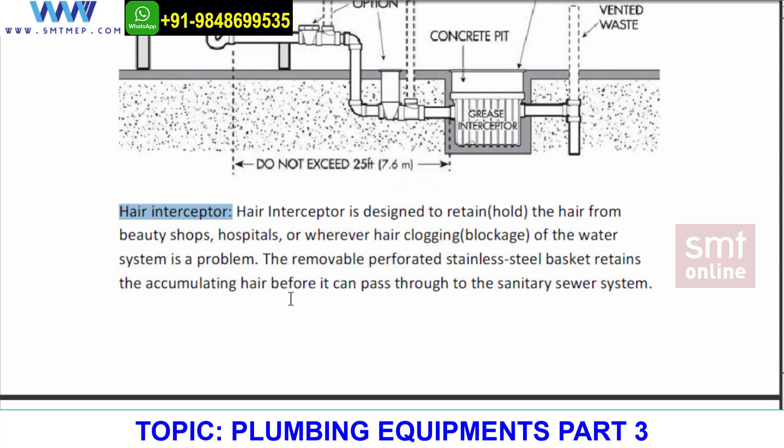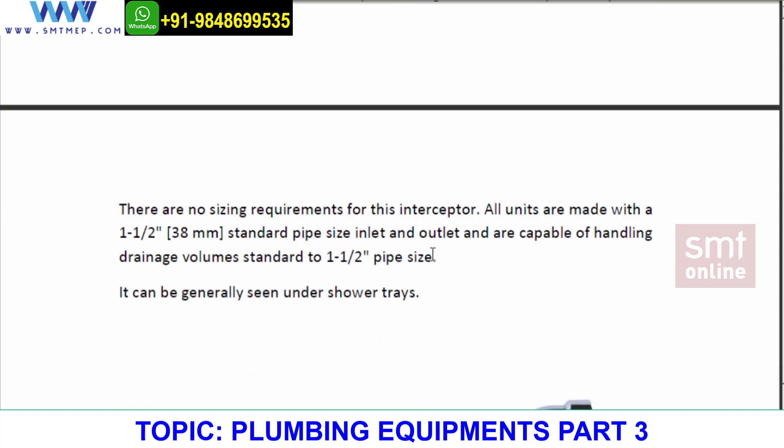This is a hair interceptor and there is no design criteria for it. For the grease interceptor we do have a design criteria — at the time of drainage design I'll show you how to size a grease interceptor. But for now we are just learning the basics of plumbing. The hair interceptor has no calculation because it comes from the company as a standard volume: 1½ inches, which is 40mm.